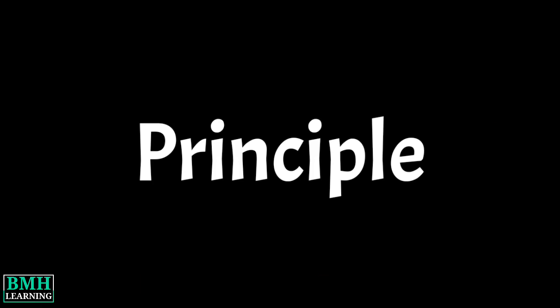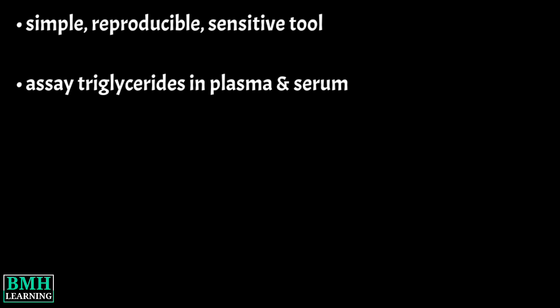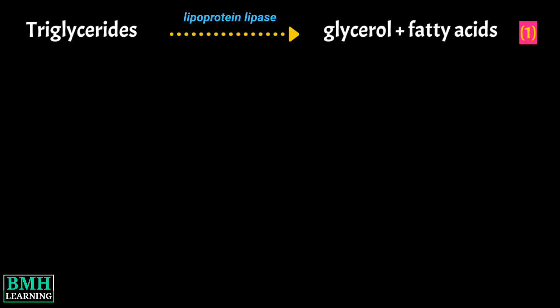Principle. The assay provides a simple, reproducible, and sensitive tool for assaying triglycerides in plasma and serum. The triglyceride calorimetric assay uses the enzymatic hydrolysis of the triglycerides by lipase to glycerol and free fatty acids.